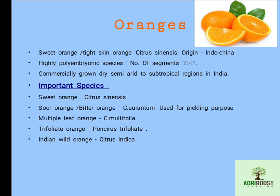The third important citrus group is orange. In this group, sweet orange or tight skin orange is the important species. The scientific name of sweet orange is Citrus sinensis and its origin is Indochina. It is a highly polyembryonic species. The number of segments present in orange is 10 to 12, and it is commercially grown in dry semi-arid to subtropical regions in India.